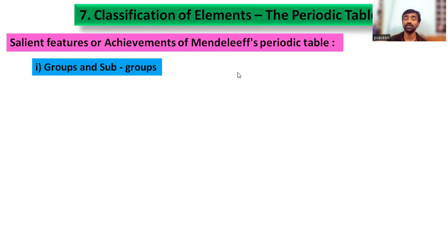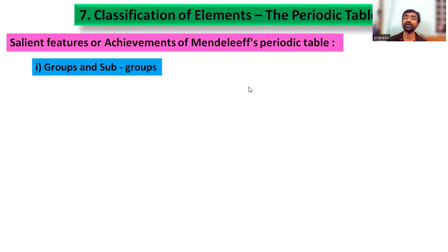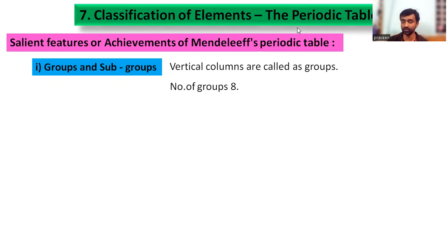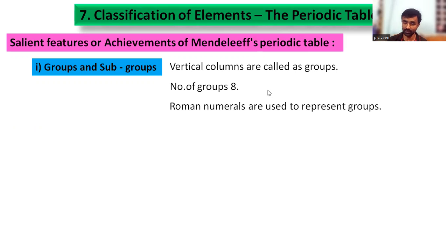First, groups and subgroups. In his periodic classification, elements are arranged into horizontal rows and vertical columns. Vertical columns are called groups. There are 8 groups in total, named using Roman numerals I to VIII. Each group is further divided into two subgroups called A and B.